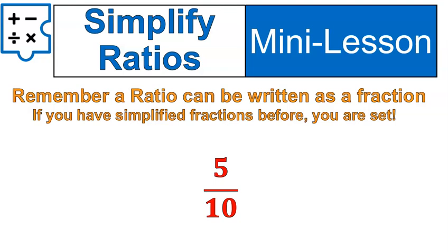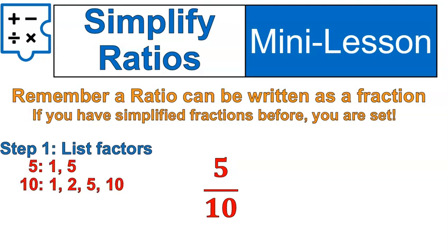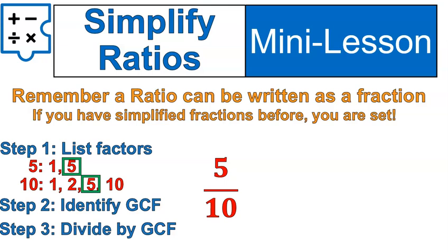So here is an example of a fraction, or a ratio. And here are the steps that I would need to follow to simplify it. I would list out the factors of both the numerator and denominator, identify my greatest common factor, and then divide both the numerator and denominator by the greatest common factor. So I'm dividing the top and bottom of the fraction by 5. That gives me my fraction in lowest terms.